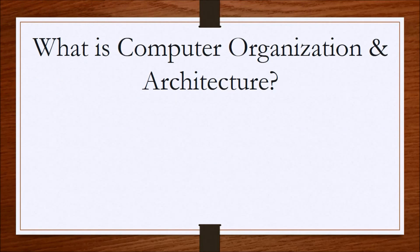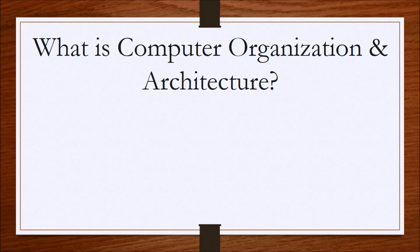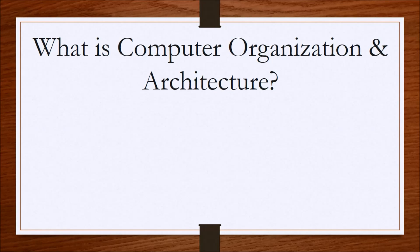Hi everybody, welcome back. So, what is computer organization and architecture? Well, it's the way that we look at how components in a computer system behave and how they are designed. It looks at how different components need to behave to process digital information. A computer system is made up of different layers,